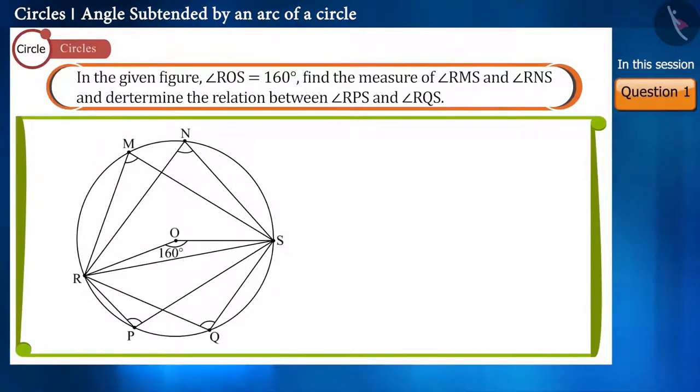In the given figure, the value of angle ROS is 160 degrees. Find the measure of angle RMS and angle RNS and determine the relation between angle RPS and angle RQS.